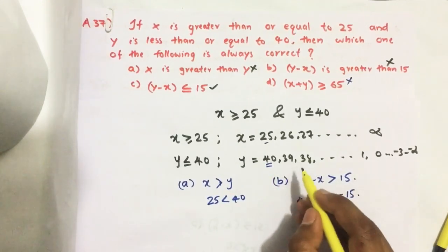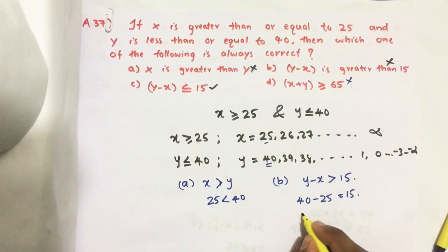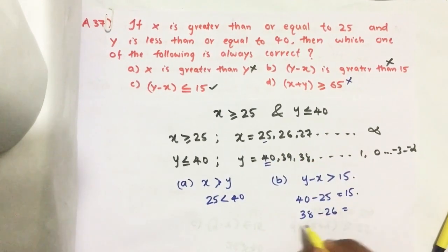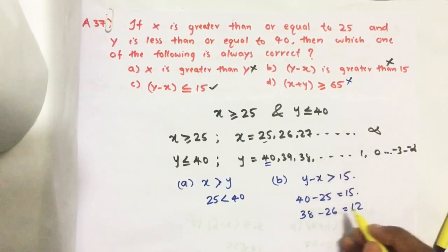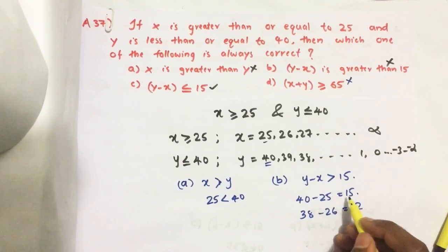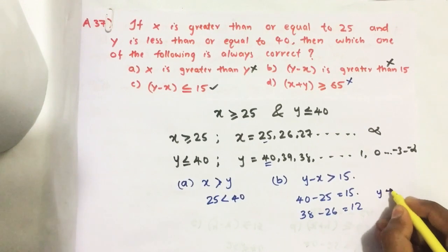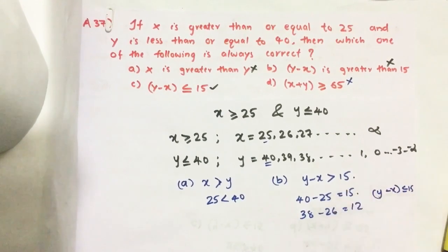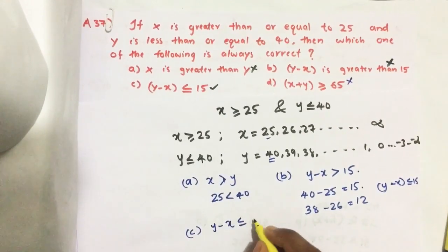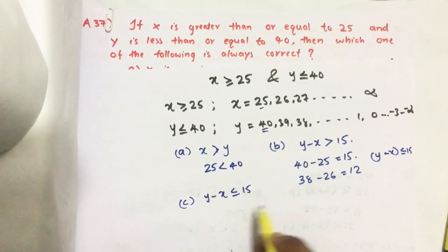Suppose if you are using some other value of Y, like 38 and 26 or 25, then we get 12. Any other number we consider, we get a value less than 15. So Y minus X is less than or equal to 15, not greater than 15. This option is also ruled out.